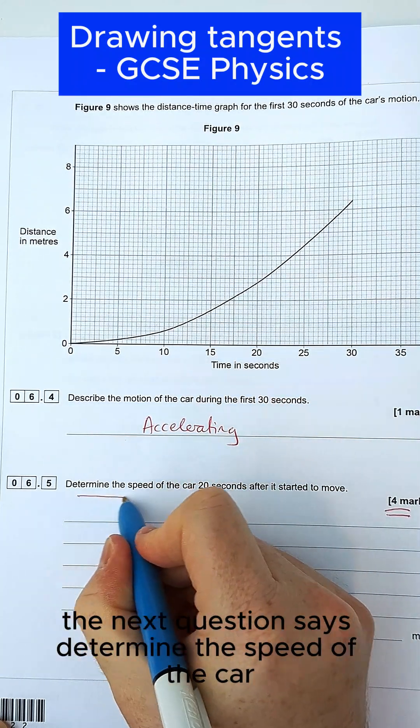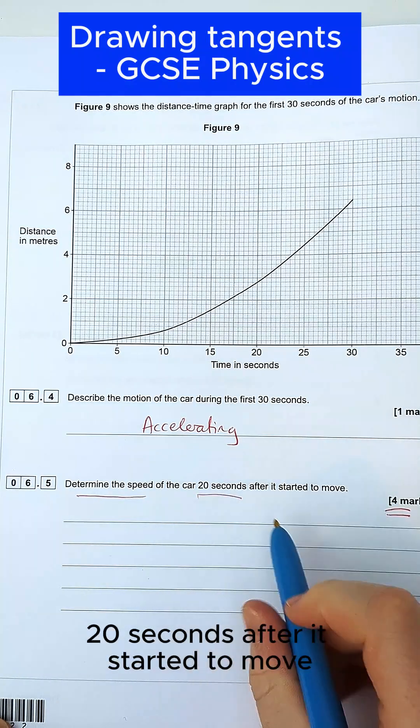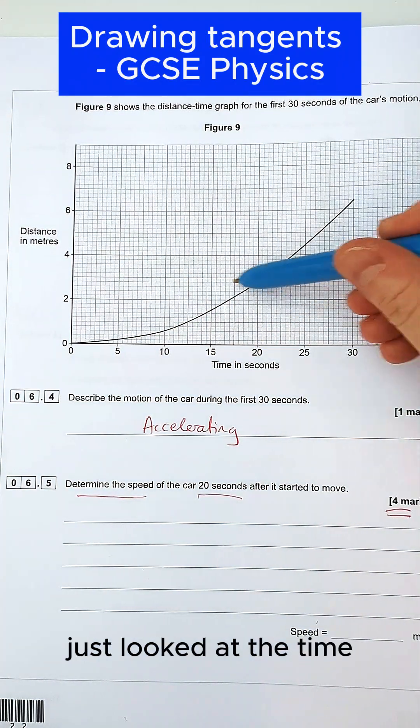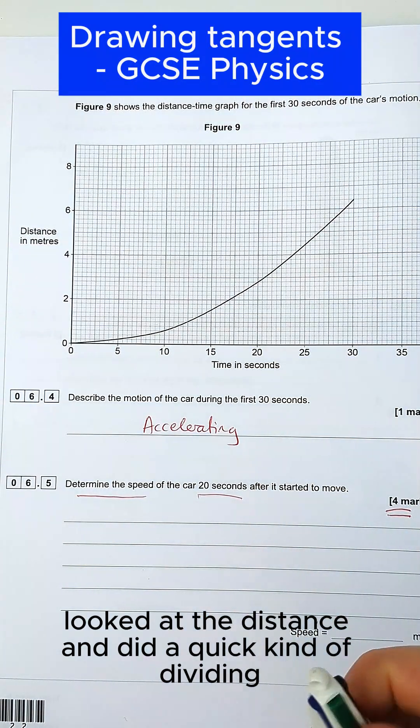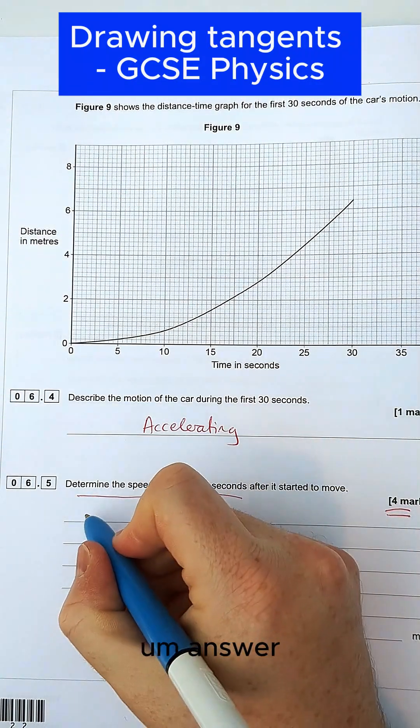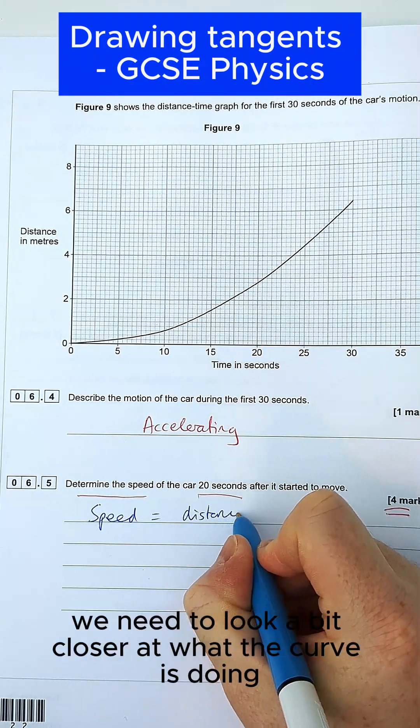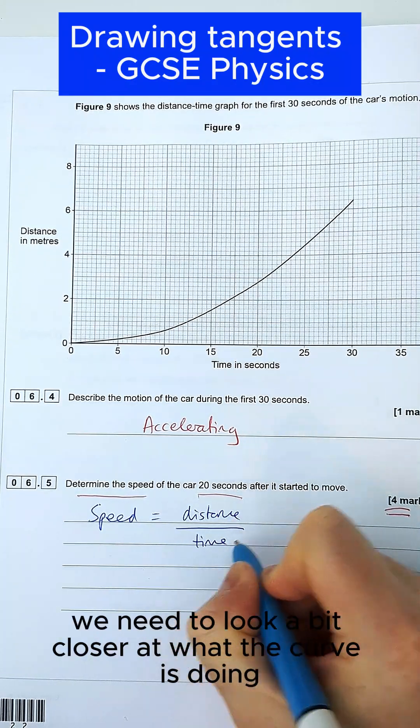The next question says determine the speed of the car 20 seconds after it started to move. So lots of people in this question just looked at the time, looked at the distance, and did a quick dividing answer to work out the speed. However, while that would have got you 1 mark, to get all 4 we need to look a bit closer at what the curve is doing.